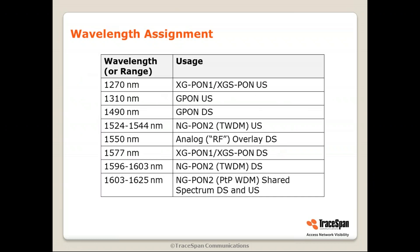In terms of wavelength assignment: G-PON uses 1310 nm upstream and 1490 nm downstream, with 1550 nm reserved for analog RF overlay — the channel used for delivering analog TV. XG-PON 1 and XGS-PON use different wavelengths: 1270 nm upstream and 1577 nm downstream. There are also ranges of wavelengths reserved for NG-PON 2, which are explained in a separate video.